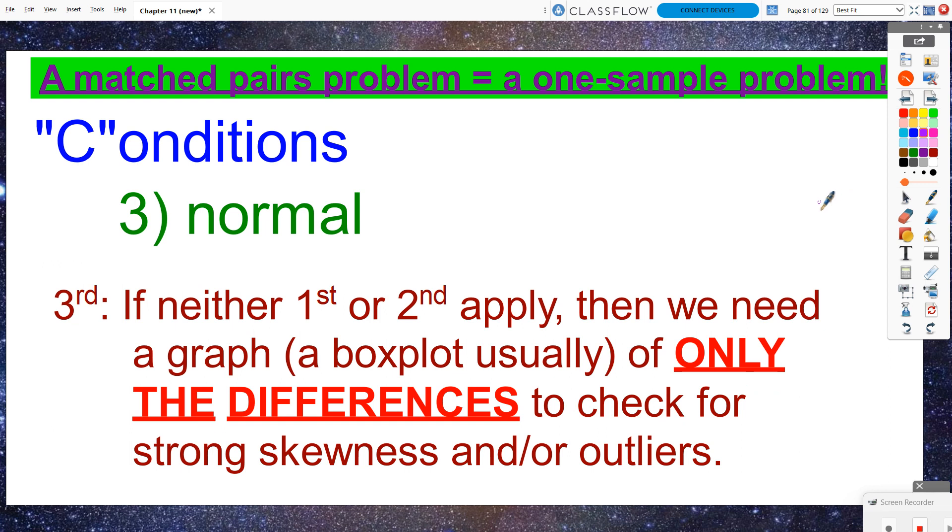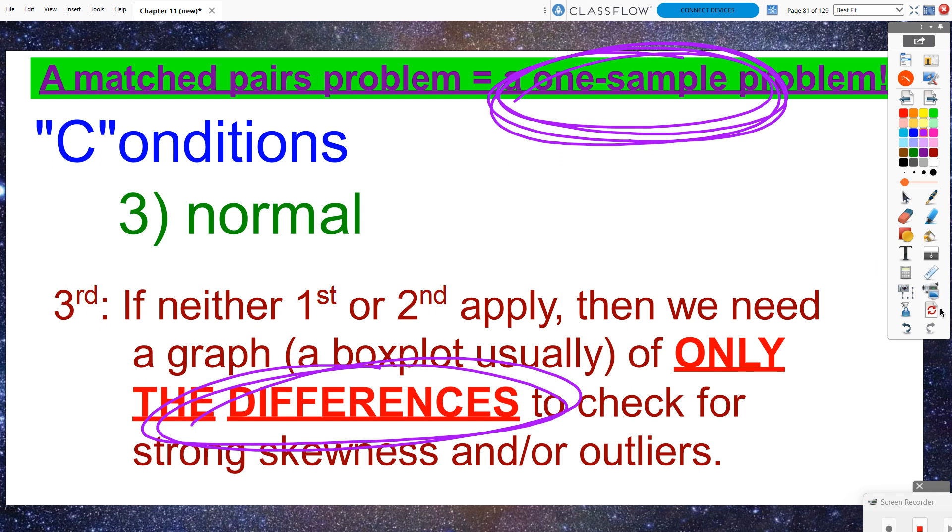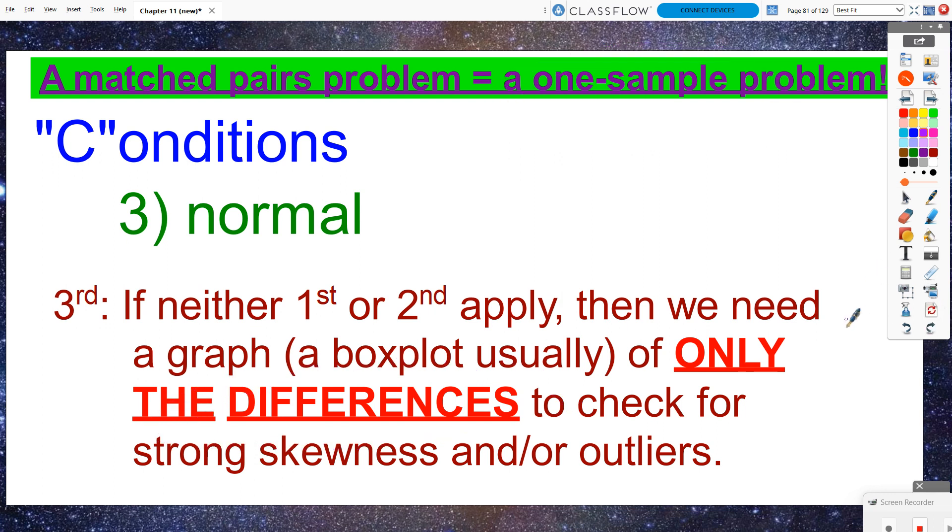But if neither of those work out, then we need to look at a box plot or box plots, depending if it was a one sample or a two sample problem. Remember that a matched pairs problem is just a one sample problem, but we need to look at just the differences only. That's the only box plot we need to consider here.